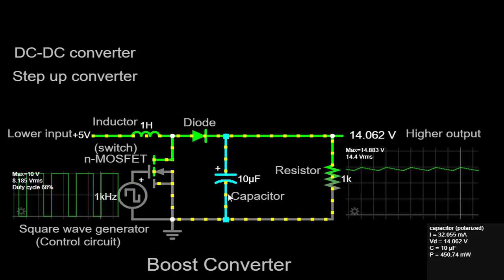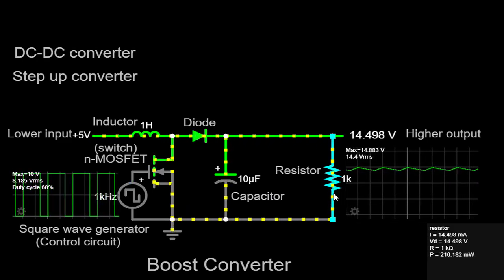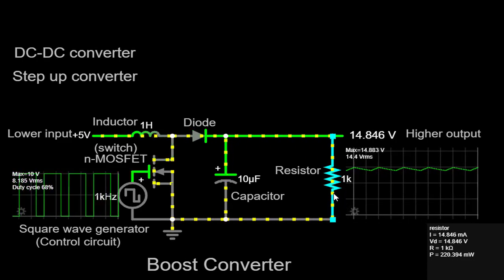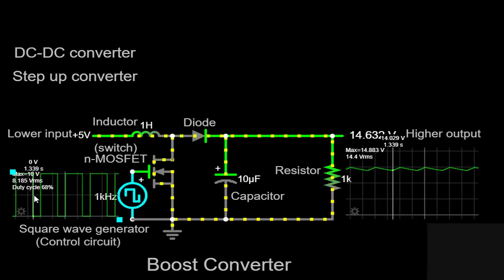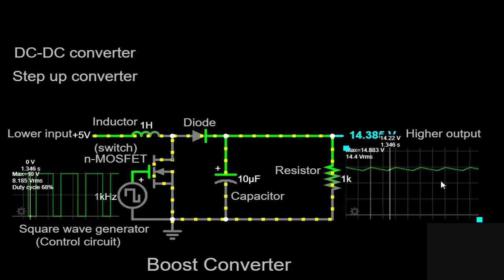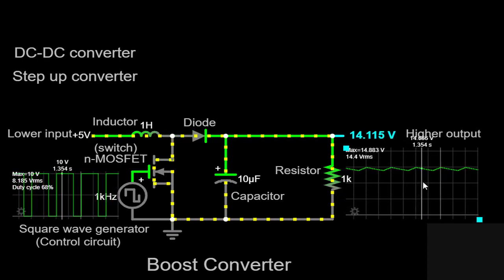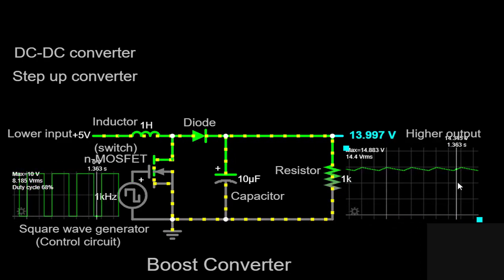Finally, we measure the output voltage across the resistor, which represents our load. The resistor simulates a practical load that the boost converter would typically drive. By adjusting the duty cycle and frequency of the square wave generator, we can control the output voltage level of the boost converter. This flexibility enables us to step up the input voltage to meet the specific requirements of various electronic systems.